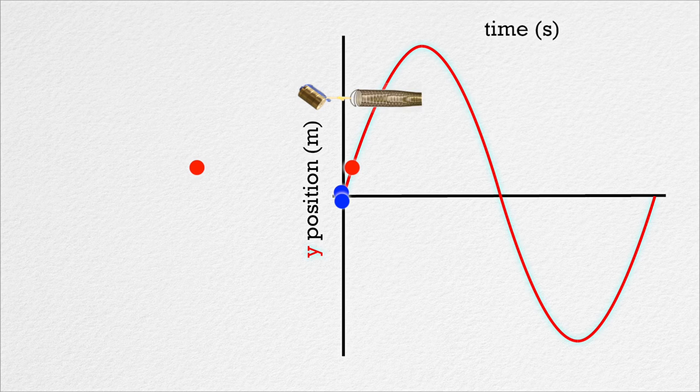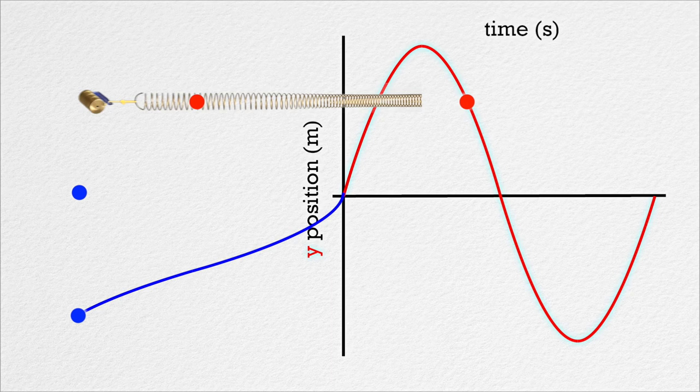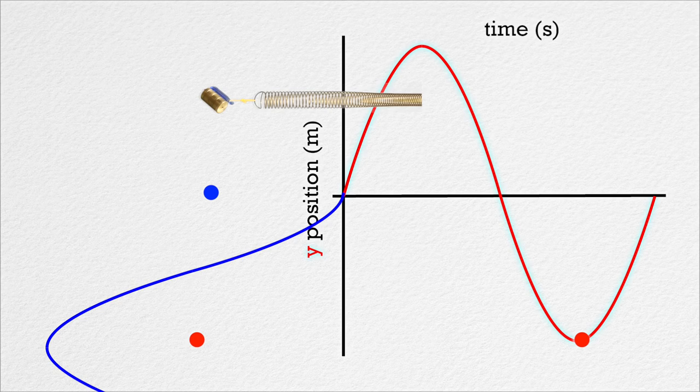If we set the dot in motion at a constant velocity down, Billy, what sort of function does that create? I think it's still a sine curve, right?